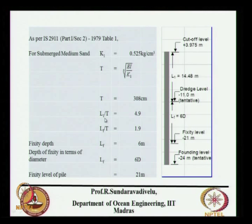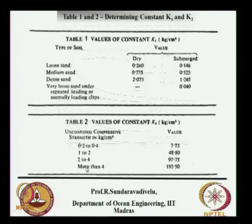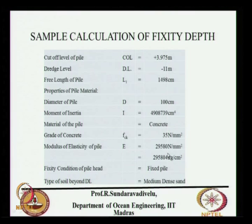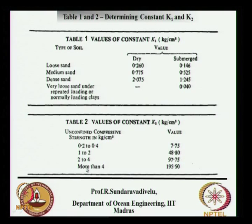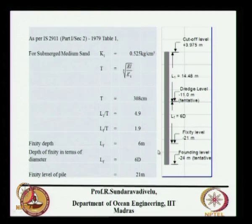Calculate L1/T — L1 is known and T has been calculated. Check whether the embedment depth is greater than 4T. T is 3 meters, so 4T is 12 meters. The embedment depth is 24 meters minus 11 meters, which is 13 meters. Since 13 meters is greater than 12 meters, the chart is applicable. Otherwise it is not applicable, meaning there will not be sufficient fixity.